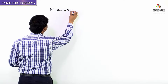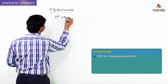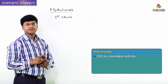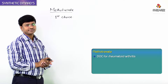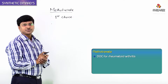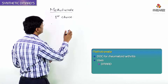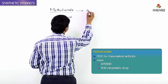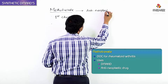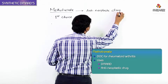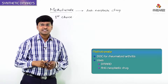Methotrexate is considered the first choice DMARD used in patients with rheumatoid arthritis. An important point to remember is that although methotrexate is used as a disease-modifying anti-rheumatic drug, it is actually an anti-neoplastic drug used in cancer chemotherapy.